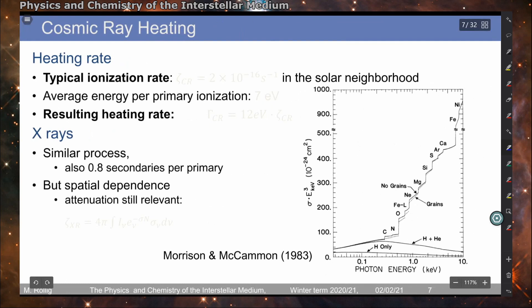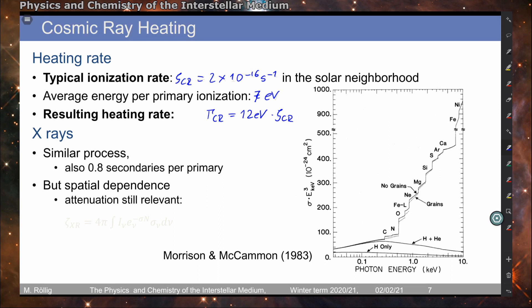Converting this into actual rates gives something like 2×10⁻¹⁶ ionizations per second. When we look at the average energies per primary ionization of about 7 electron volts, and introduce the factor of 1.8, we find a heating rate by cosmic rays of 12 electron volts times ζ_CR — so the probability of an ionization times the average energy per ionization is then the actual heating rate.